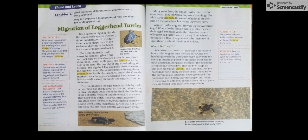Many years later, the female turtles return to the same beach they left when they were hatchlings. The adult turtles migrate thousands of miles to lay their eggs on the same beaches where they were born. Why do turtles migrate? How do they know where to go? Where do the female turtles go after they lay their eggs? For many years, the migration patterns of loggerhead turtles was a mystery. Then, scientists developed different ways to track the migration of loggerhead turtles throughout their lives.